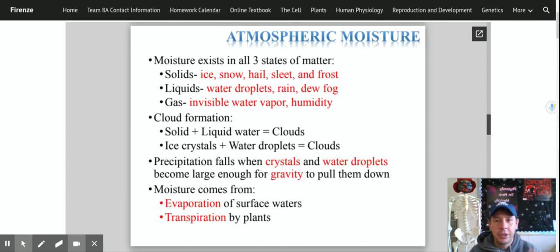So moisture exists in three different ways in the atmosphere around us. It comes as solids, liquids, and gases. Those are your normal three states of matter. So the water in the air when it's a solid can be ice when we have ice storms, snow, hail, sleet, and frost. So those are the forms of solids that we see in the air, in our atmosphere.